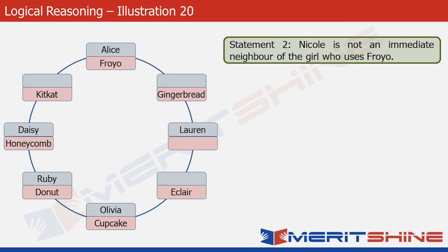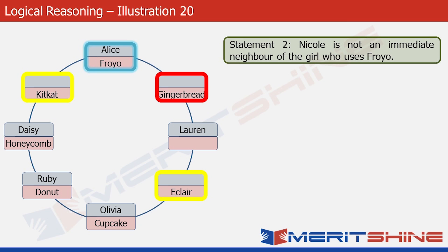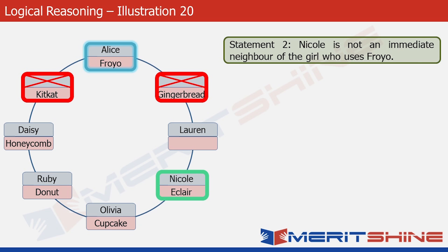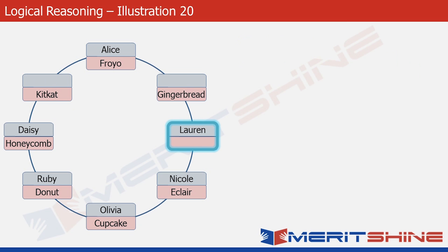Statement 2 tells us that Nicole is not an immediate neighbor of the Froyo user. We can see that Alice is the Froyo user. There are three boxes where the girl's name is missing. We cannot put Nicole in two of them because Alice, the Froyo user, would be an immediate neighbor. So Nicole has to go in the third box. Now Lauren is the only one without an operating system written, and the only operating system left is Lollipop. So Lauren must be the Lollipop user.